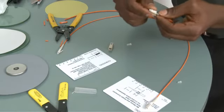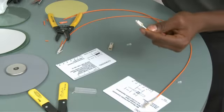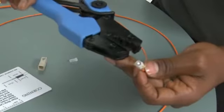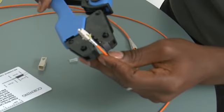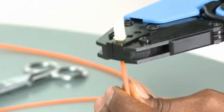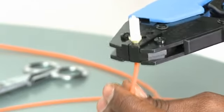For the SC and ST, we use a blue tool. And since we are working on 2.9 millimeter jacket, I'm going to install it just like that on the A. The tool releases once the crimp is all the way.